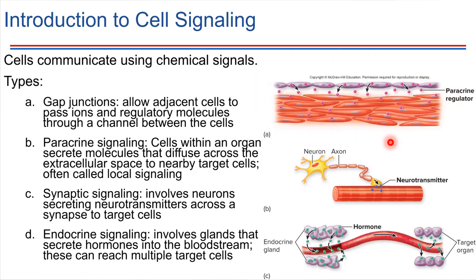Paracrine signaling relies on diffusion. Next, we have synaptic signaling. This is the type of signaling that neurons — nerve cells — use, and it involves the release of a molecule called a neurotransmitter, which is the signal molecule. It gets released and diffusion carries it over a very short distance to a target cell, which could be a muscle cell or another neuron.